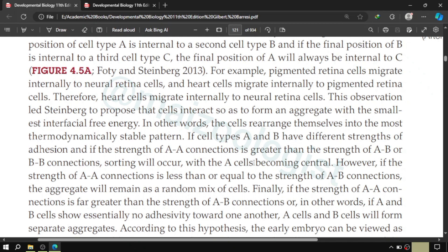However, if the strength of AA connection is less than or equal to the strength of AB connection, then the aggregate will remain as a random mix of cells. It is because A loves to get attached to A as much as it loves to get attached to B. Thus, the random aggregate will remain as a random aggregate or mix of cells.